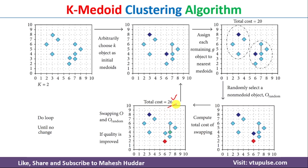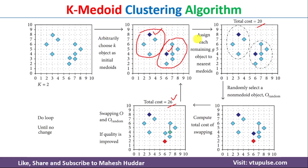We compare the new total cost with the previous total cost. The previous cost was 20 and the new cost is 26. Since the new cost is higher, swapping is not a good option. If the cost were decreasing, we would repeat the steps. Since it increased, the current two Medoid points are considered optimal, and this is how the K-Medoid clustering algorithm works.